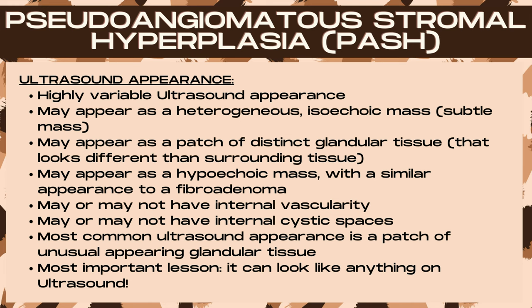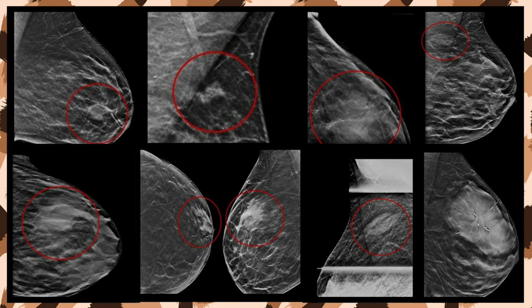The best way to find PASH is to compare the ultrasound with the mammogram and get a location of where you're looking. Although sometimes it appears as a mass on ultrasound and is more readily visible. On a mammogram, PASH appears as a distinct area of tissue — most commonly a patch that is either new or increasing and developing over time. Before looking for PASH on breast ultrasound, it's incredibly helpful to have the mammogram findings to correlate with the ultrasound.